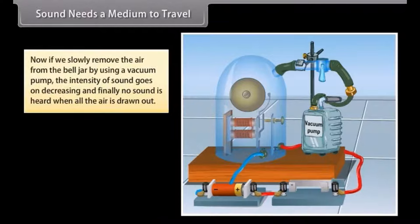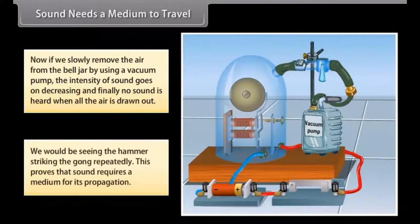Now, if we slowly remove the air from the bell jar by using a vacuum pump, the intensity of sound goes on decreasing and finally, no sound is heard when all the air is drawn out. We would be seeing the hammer striking the gong repeatedly. This clearly proves that sound requires a medium for its propagation.